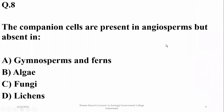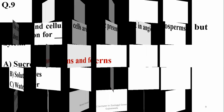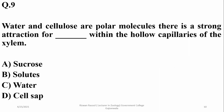Companion cells are present in angiosperms but absent in gymnosperms and ferns, so Alpha is the right answer. Water and cellulose are polar molecules with strong attraction between them. Within the hollow capillaries of the xylem, water's attraction to polar substances like cellulose is known as adhesion, and the right option is Charlie.